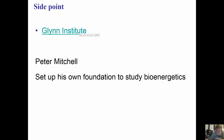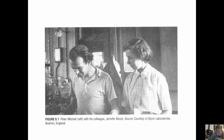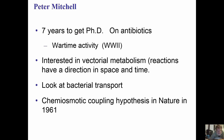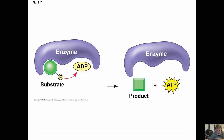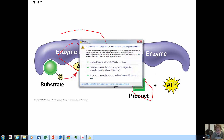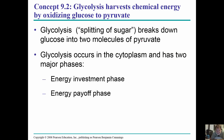Peter Mitchell is one of the coolest scientists I've read about — he set up something called the Glynn Institute. In substrate-level phosphorylation, an enzyme with a phosphate connects to a substrate, and it moves that phosphate over to ADP to give us ATP and our product.